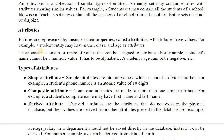Next are attributes. Entities are represented by means of their properties, which are also known as attributes. For example, if we have a student entity, then student name and student age are the properties or attributes. All attributes have some values — like age will have a number value such as 21 or 22. There also exists a domain or range of values that can be assigned to attributes. For example, if a class only admits students of age 30 or below, then above 30 the student cannot get admitted — that is the specified range.